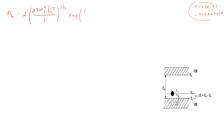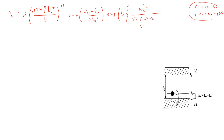Exponential of EV minus EA divided by 2KBT. The next term as exponential — the 1/2 I bring as a power. So NA power 1/2 divided by 2 power 1/2 into (2π mH* KBT divided by H²) whole power 3/4. That is 3/2 power 1/2, so 3/4.